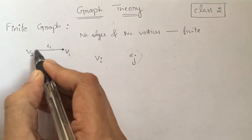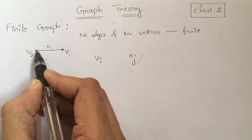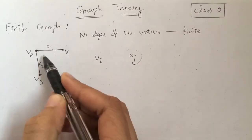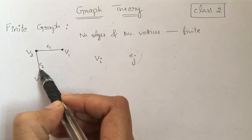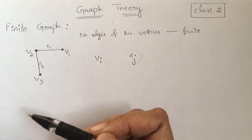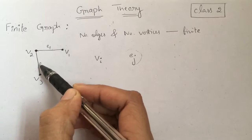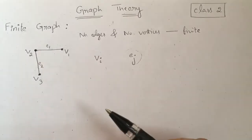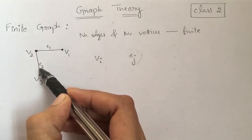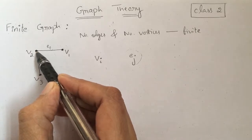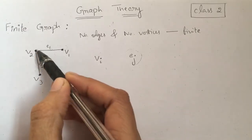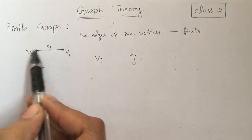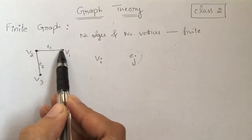Suppose I have vertex v2 which is adjacent to vertex v1 and adjacent to vertex v3. I am calling edges e1 and e2 adjacent because of this vertex v2 — they are non-parallel edges. Therefore, two non-parallel edges are adjacent if they are incident on a common vertex. Similarly, two vertices are adjacent to each other since they are the vertices of the same edge.